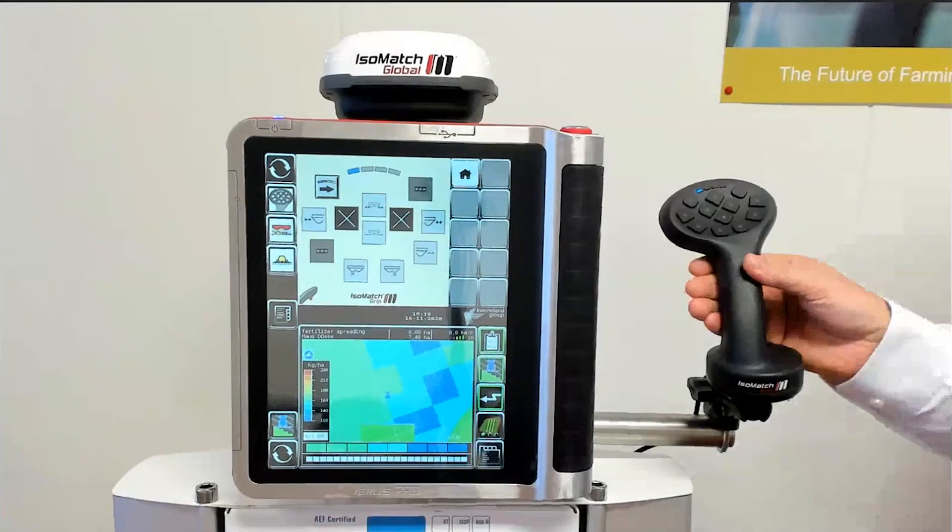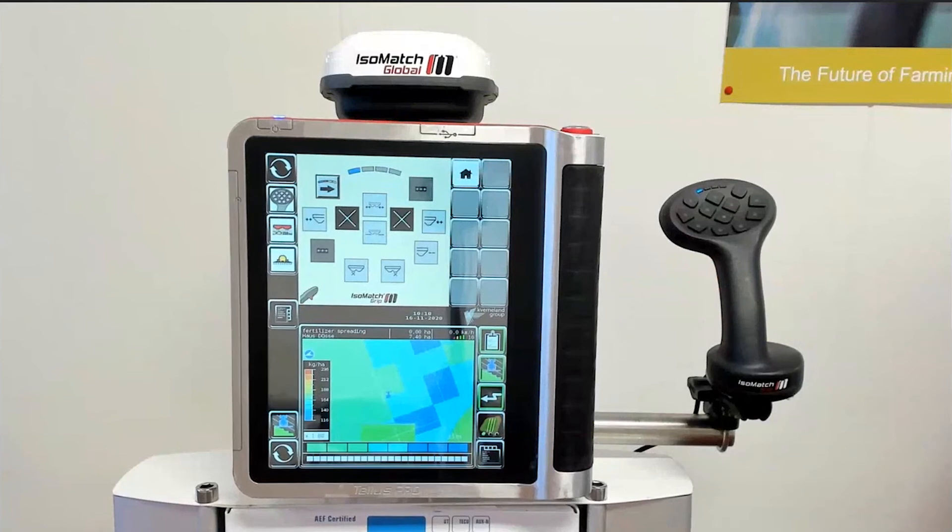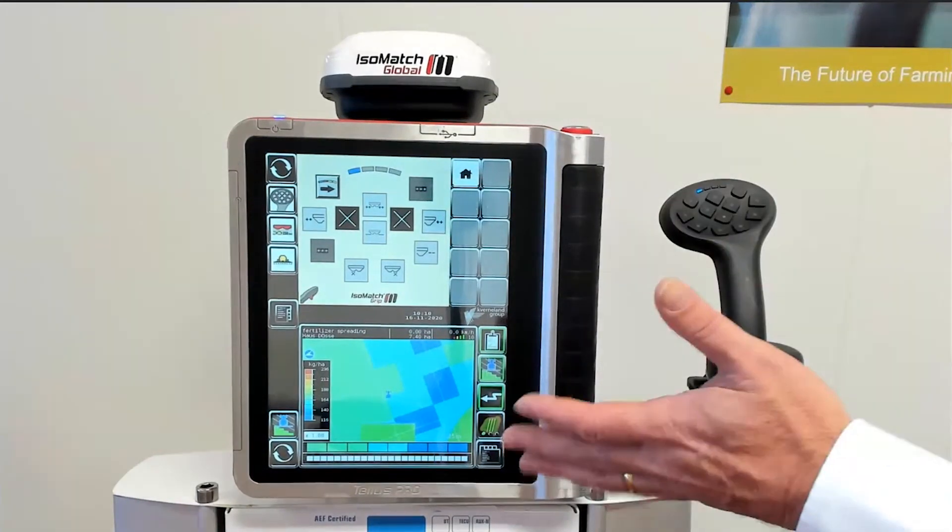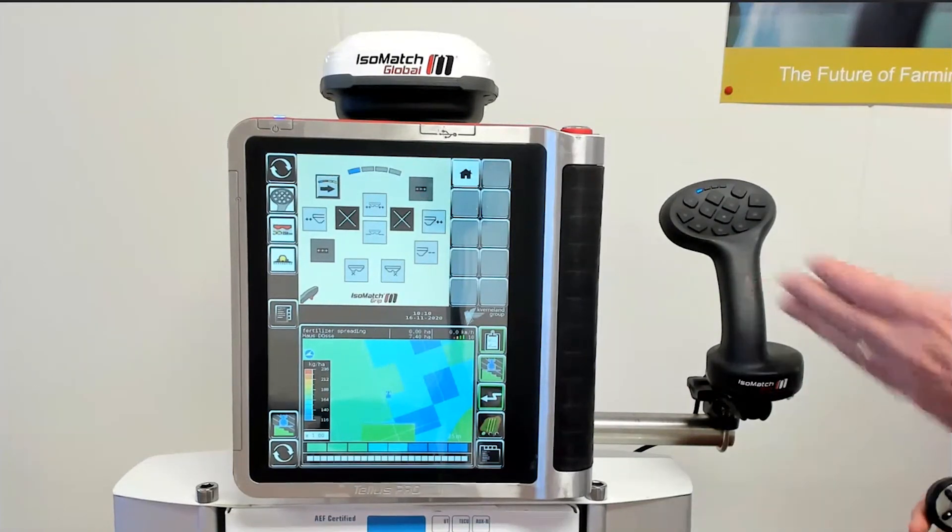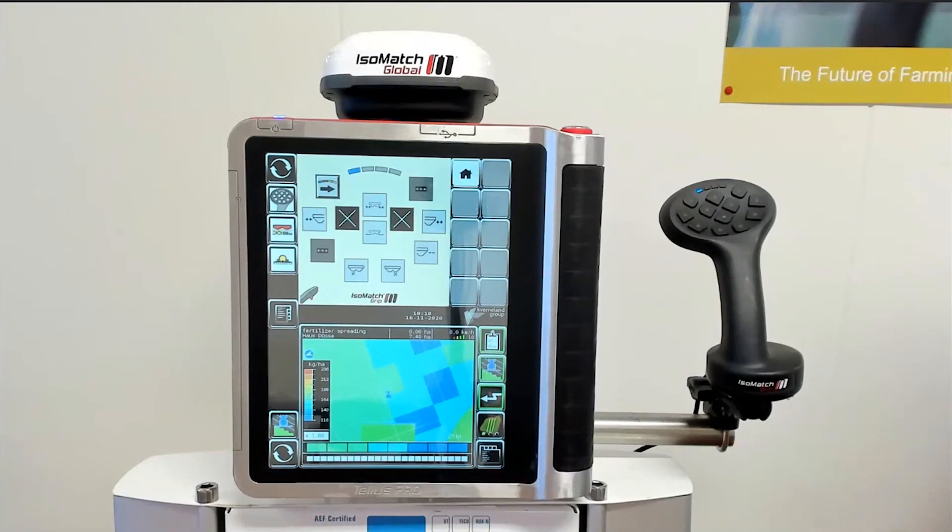As the grip is ISOBUS certified for the auxiliary function functionality, it will not only work with the Kverneland group terminals, but also with third-party terminals with ISOBUS certification for the function auxiliary. If you want to use the IsoMatch grip with an ISOBUS terminal of a third-party, please consult the manual of the third-party terminal how to program the grip buttons.